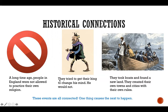Then they tried to get their king to change his mind, and he would not. He would not let them practice their own religion — they must practice the religion that he wanted them to. So then the next connection is they took boats and found a new land, and created their own towns and cities with their own rules.